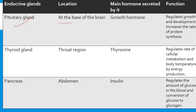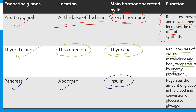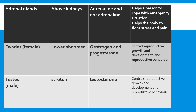In the chart: the pituitary gland is located at the base of the brain and its main hormone is the growth hormone, which regulates growth and development and increases the rate of protein synthesis. The thyroid gland is located in the throat region, secretes thyroxin, and regulates the rate of cellular metabolism and body temperature. The pancreas is in the abdomen, secretes insulin, and regulates glucose levels and its conversion to glycogen. The adrenal glands are above the kidneys, secreting adrenaline and noradrenaline, helping the body cope with emergency situations and fight stress — that is why adrenaline is called the emergency hormone.